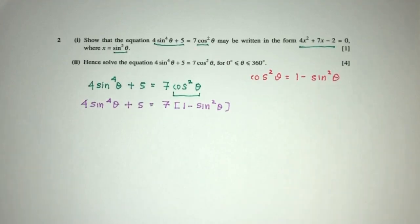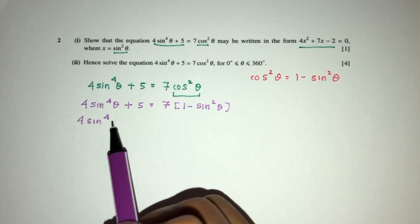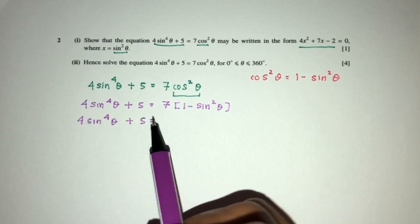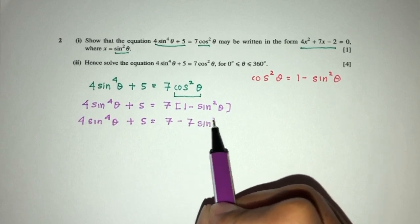Now let's try to expand and simplify. You will have 4sin⁴θ + 5 = 7 - 7sin²θ.